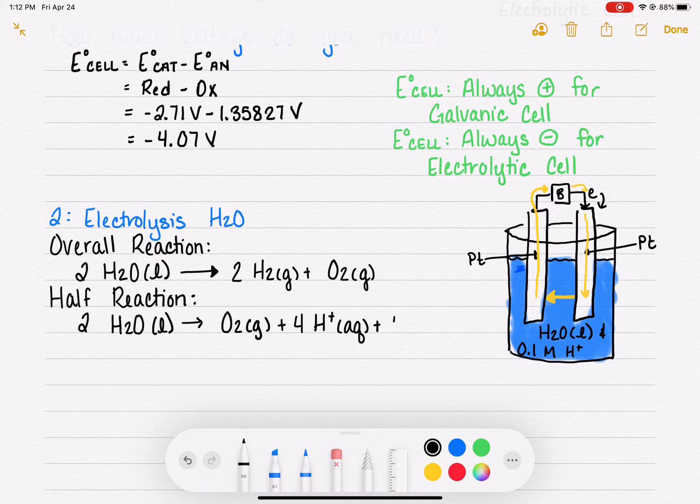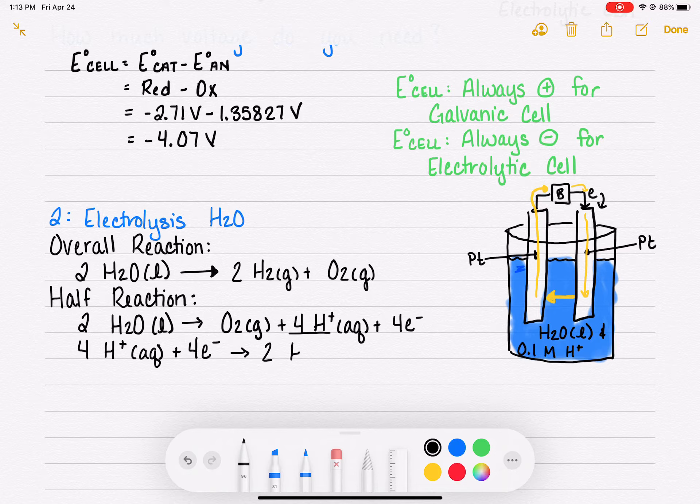Those four H plus ions that are produced are the reactants of the second half reaction. Four H plus ions pick up four electrons and that is where we get the two molecules of H2 gas. Just to be clear, the H plus ions that are needed for this half reaction are coming from the previous half reaction, not needed by addition.